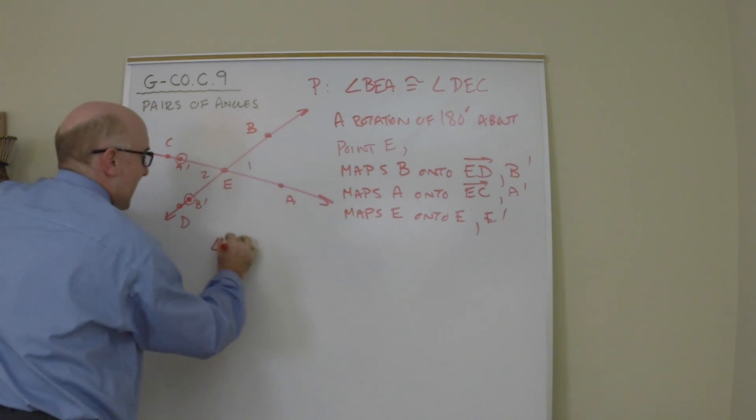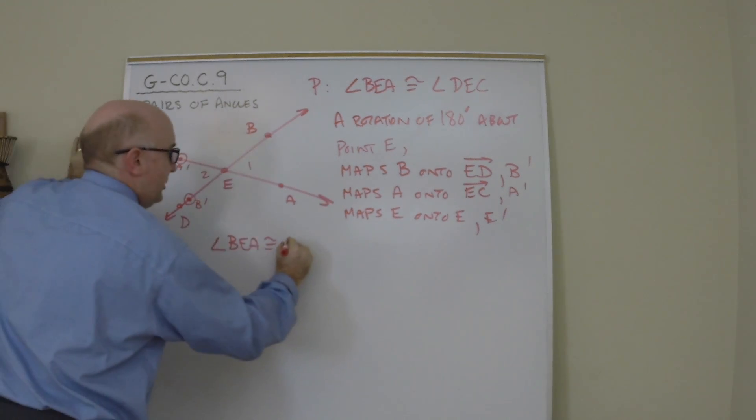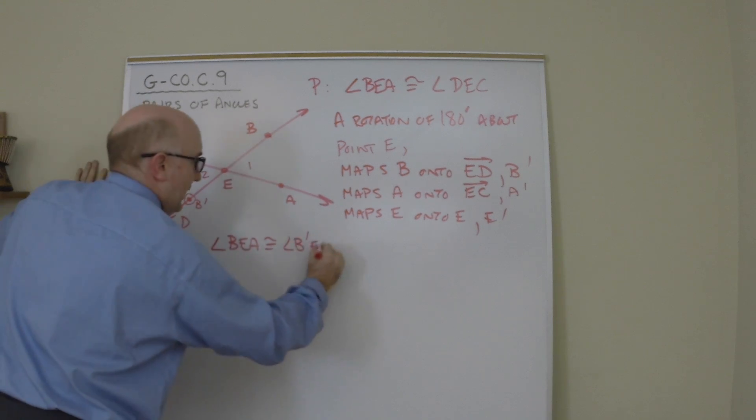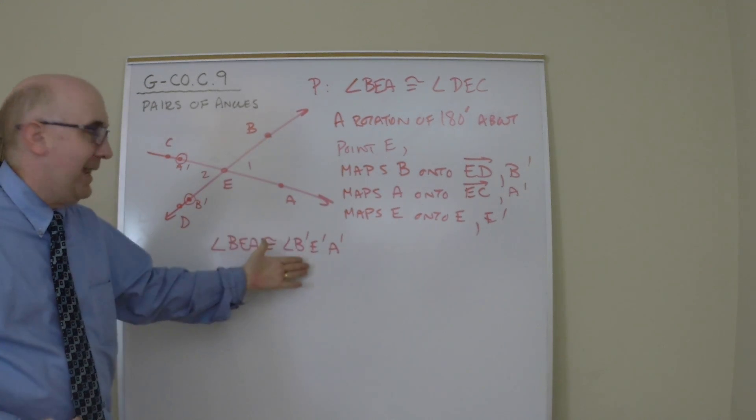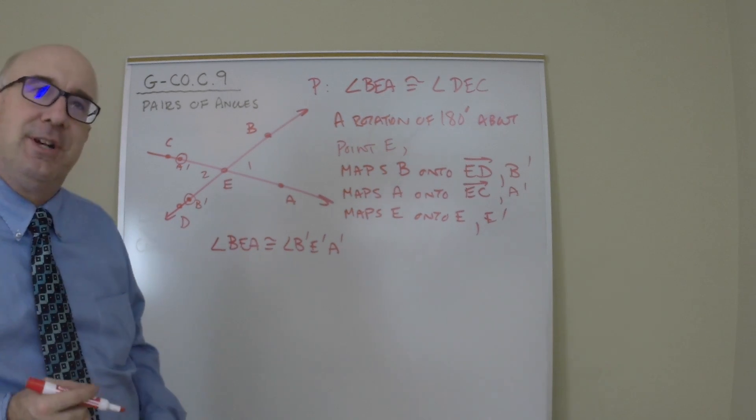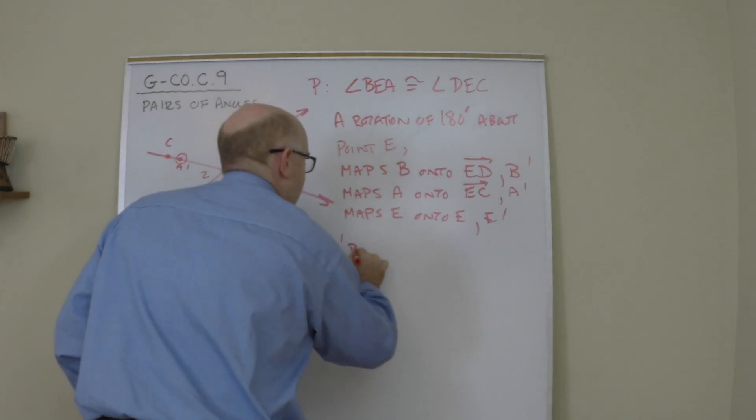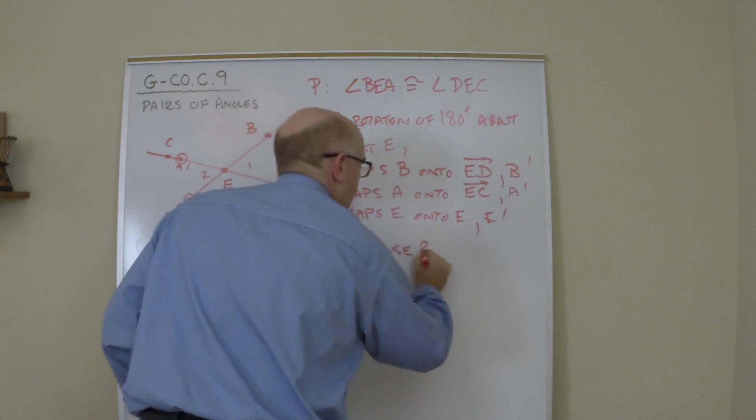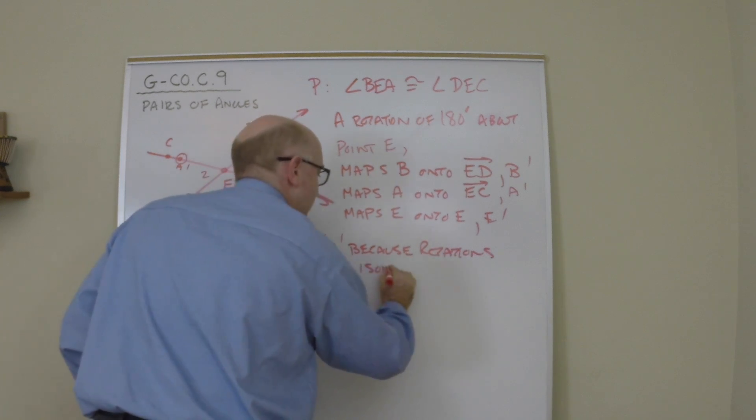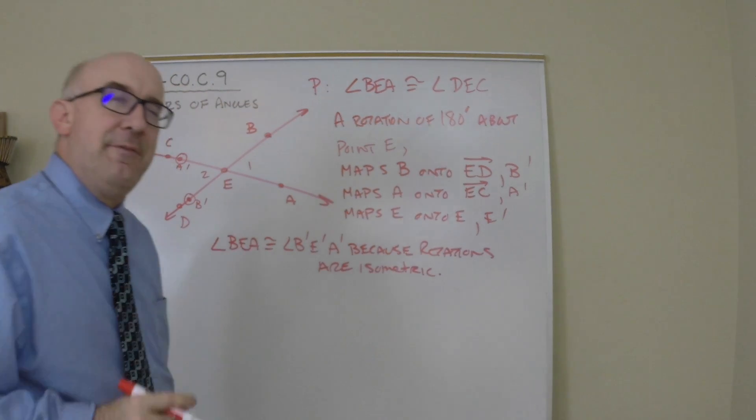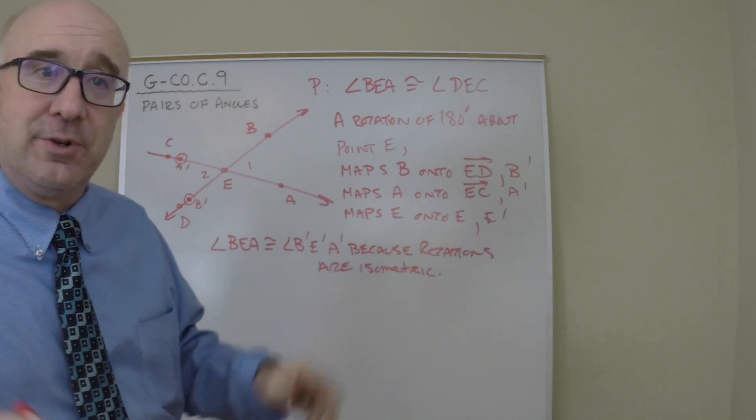So what we've done is we've done an isometric rotation of 180 degrees. We know by definition that it has to land on the opposite rays, which it did perfectly. Now let's use the logic. So angle BEA, our original angle, is congruent to its image, B prime E prime and A prime. Now why is the original and an image equal or congruent to each other? I'll tell you why. Because you just did an isometric transformation. Because rotations are isometric. And we know by definition earlier that an isometric rotation preserves the angle, size, copies angles, all of those things we need.